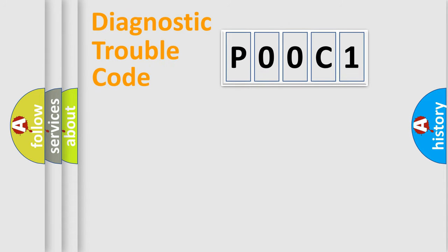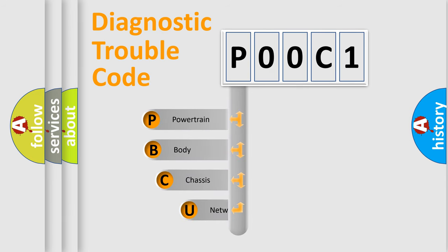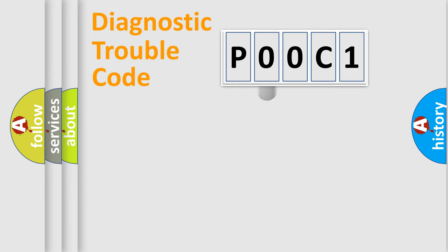First, let's look at the history of diagnostic fault code composition according to the OBD2 protocol, which is unified for all automakers since 2000. We divide the electric system of automobile into four basic units: Powertrain, Body, Chassis, and Network. This distribution is defined in the first character code.